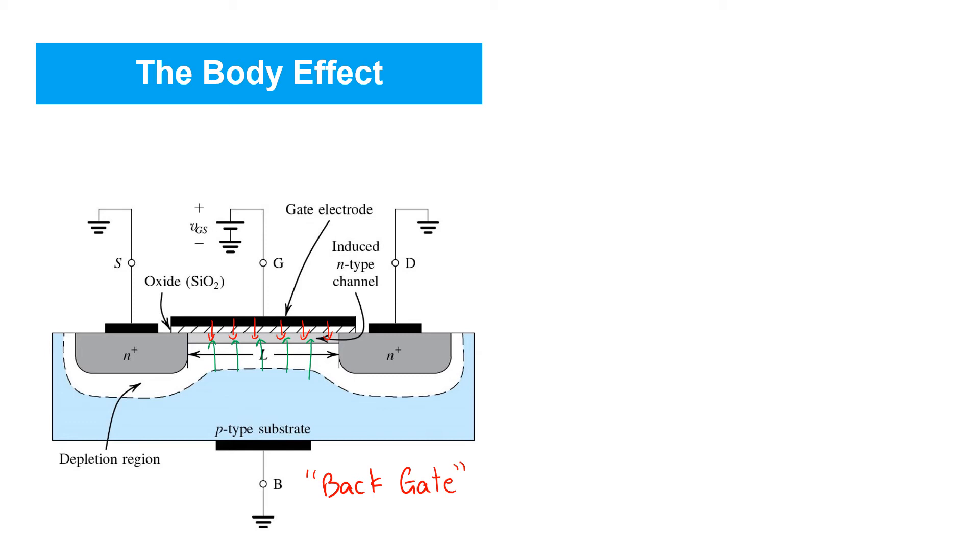Now, we can't really, in this NMOS transistor, lift the body voltage above that of the source or channel region, because that's going to start to forward bias the PN junctions and cause large current to flow. You know, the current through a forward bias PN junction gets large very quickly.